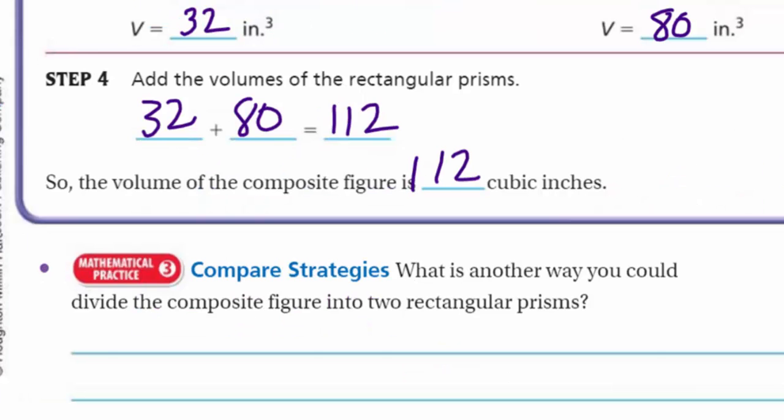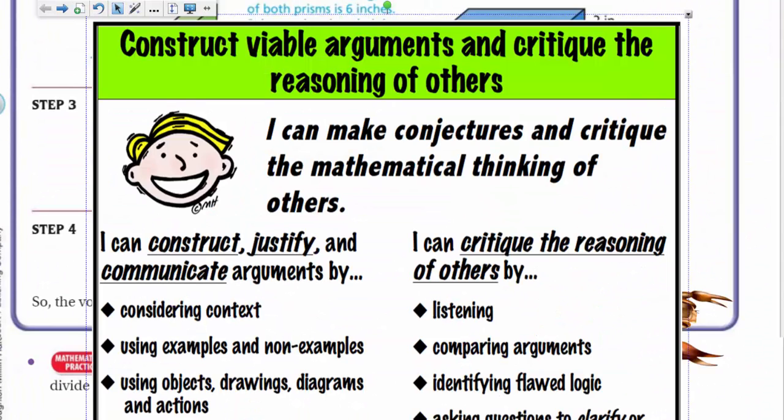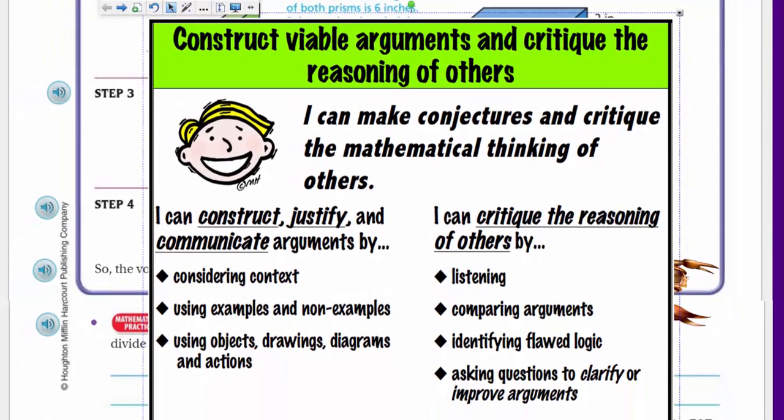Now it says mathematical practice 3. Mathematical practice 3 states that we construct viable arguments and critique the reasoning of others. This is important. We do this in class all the time. It says that I can make conjectures and critique the mathematical thinking of others. I can construct, making, justify. I have to back up my reasoning and communicate arguments. I can do this considering the context of the problem I'm looking at, using examples or non-examples, and using objects, drawings, diagrams, and actions. All of these things is part of math. We want to be able to make those arguments, those statements, so that we can critique whether we agree or disagree with someone else. I can critique the reasoning of others by listening, comparing the arguments, identifying maybe flawed logic, asking questions to clarify or improve arguments.